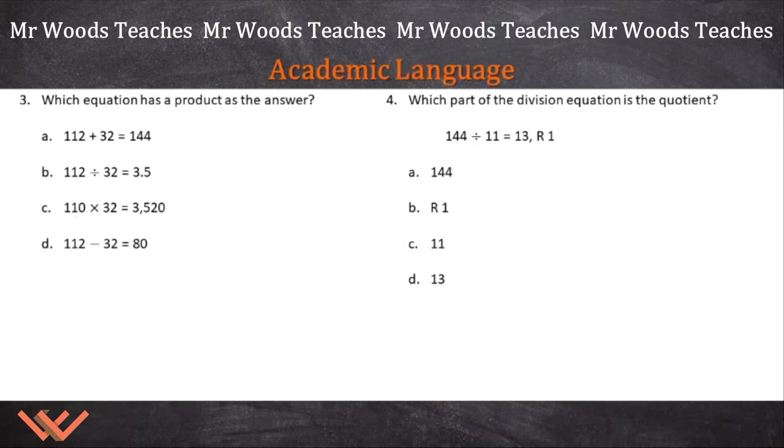What do you know? I was talking about academic language or vocabulary, and that's where we're at right now. This is where your new teacher is going to test you or pre-assess you about certain academic language. So let's take a look. Which equation has a product as the answer? You should know that these are equations, has a product. And that's what we're trying to find out. 112 plus 32 is equal to 144. Add in, add in, equals the sum. This is a sum.